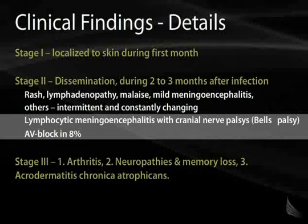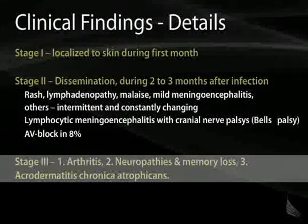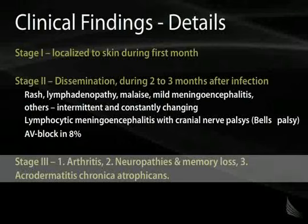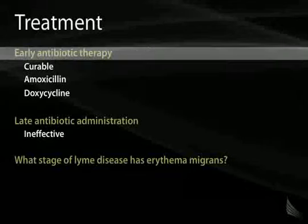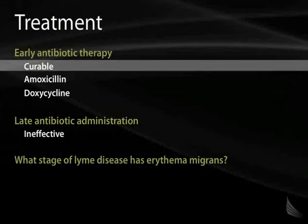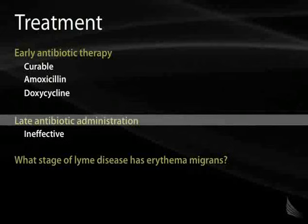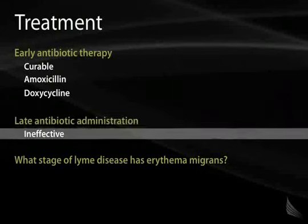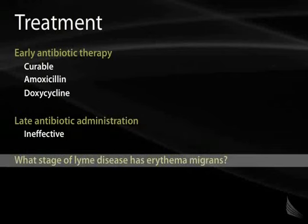Stage 3 Lyme disease is characterized by arthritis, neuropathies, memory loss, and acrodermatitis chronica atrophicans. Treatment includes early diagnosis and antibiotic therapy — amoxicillin or doxycycline — which is curative if caught early. If you wait until secondary or tertiary Lyme disease, antibiotic administration is largely ineffective. Review question: what stage of Lyme disease has erythema migrans? The answer is the first stage.